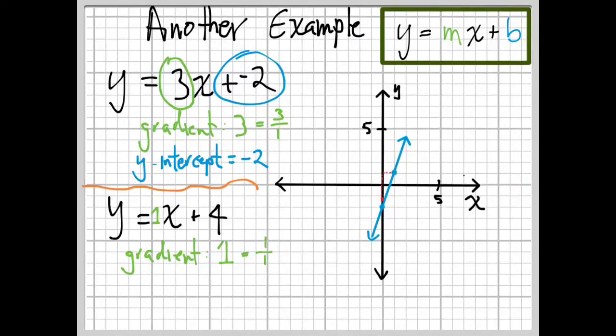Which, of course, as a fraction, is 1 over 1. So, it's a rise of 1 and a run of 1. So, nice and easy. Our y-intercept is very simple. It's just 4. That number at the end of the equation there.